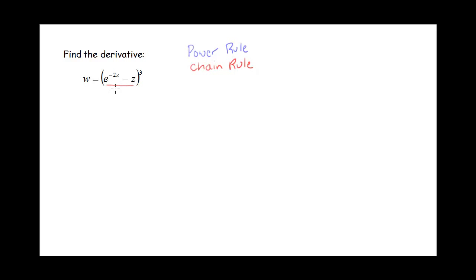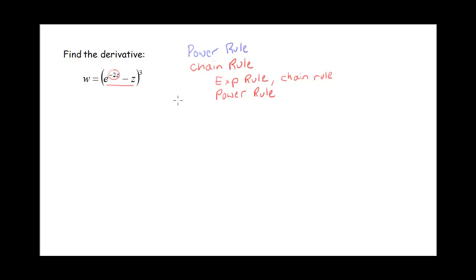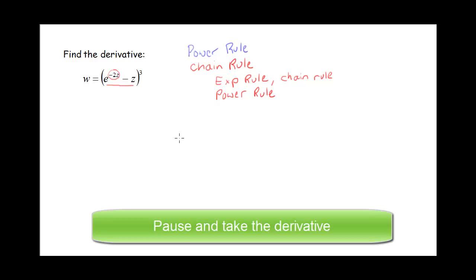When I go to take the derivative of that exponential, I've got two terms, so I'm going to need to use that exponential rule for the first term. And also in that first term, I have negative 2z here instead of just plain old z, which means I'm going to have to use that chain rule again. For the second term, it's just a plain power rule. So pause the video and see if you can come up with the derivative, then come back and we'll compare answers.